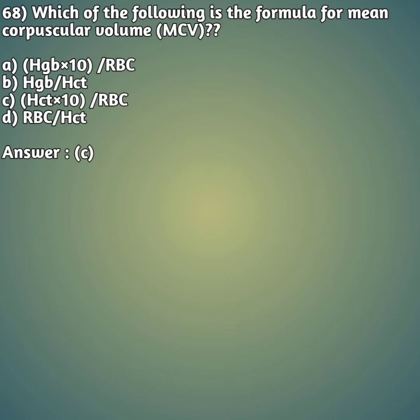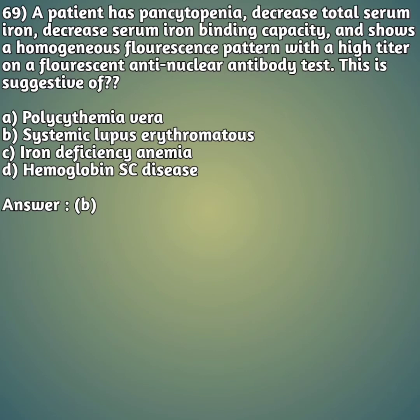Moving on to our 69th question - a case history. A patient has pancytopenia, decreased total serum iron, decreased serum iron binding capacity, and shows a homogeneous fluorescence pattern with a high titer of fluorescent anti-nuclear antibody (ANA). This is suggestive of - option A: polycythemia vera. Option B: systemic lupus erythematosus (SLE). Option C: iron deficiency anemia. Option D: hemoglobin C disease.